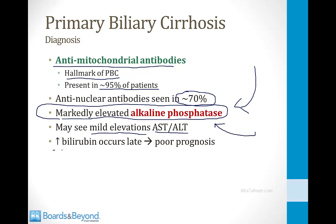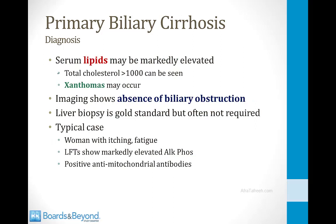Elevated bilirubin occurs late in the disease. When patients with PBC begin to develop jaundice, their disease is very progressive and they have a poor prognosis. Another key feature is elevated serum lipids — these patients have obstruction to biliary flow so they can't get lipids out in the bile. The total cholesterol can be greater than 1,000, compared to the normal level of under 200. These patients can sometimes develop xanthomas, which are skin deposits of lipids.